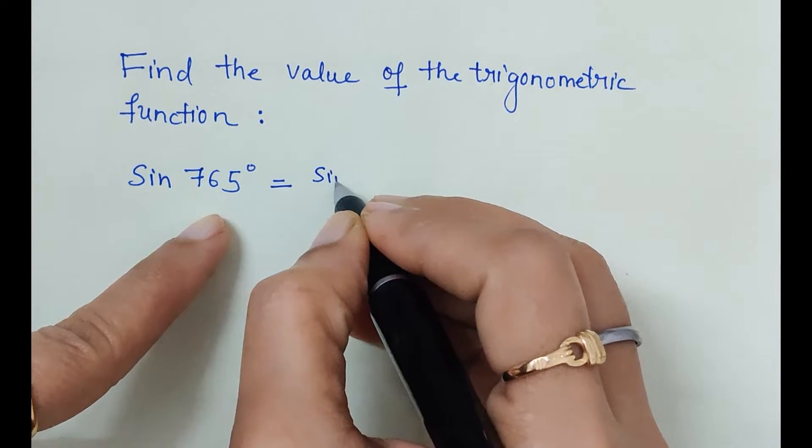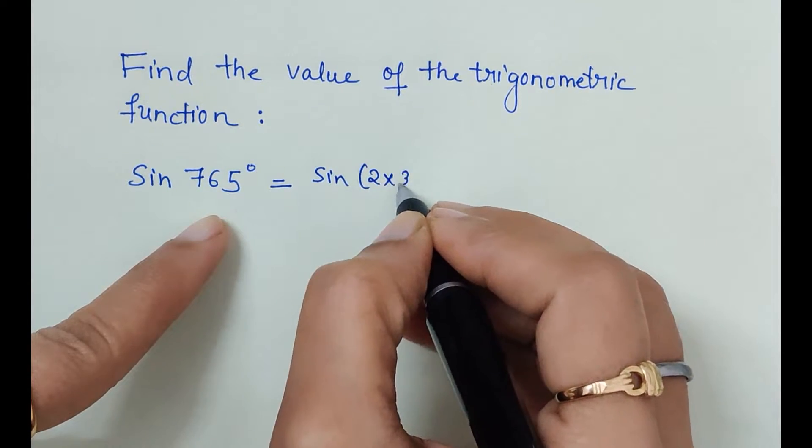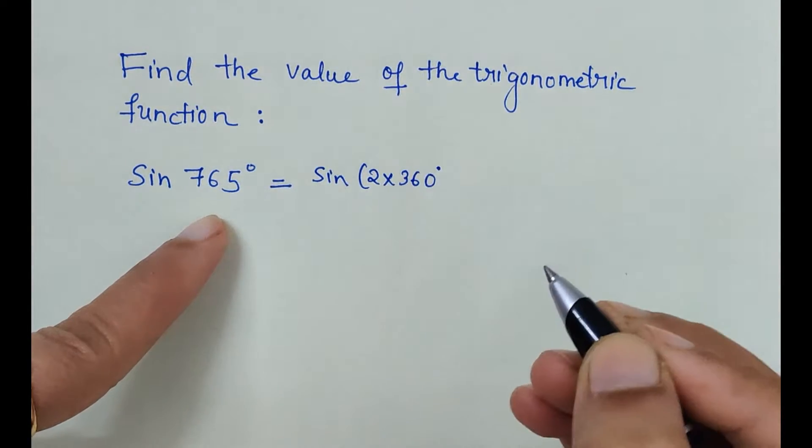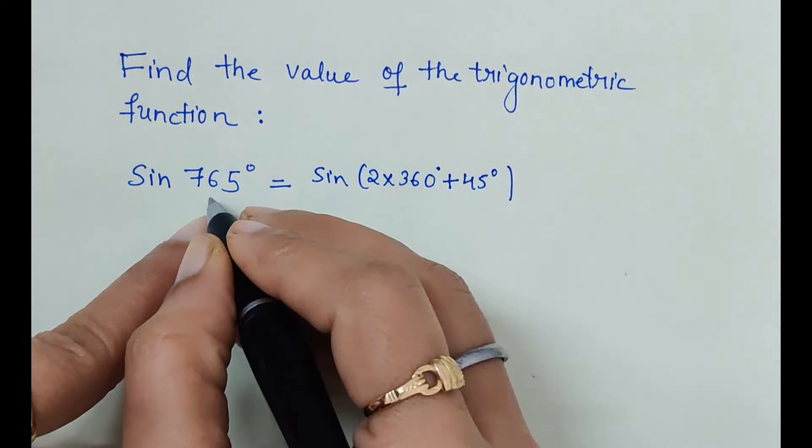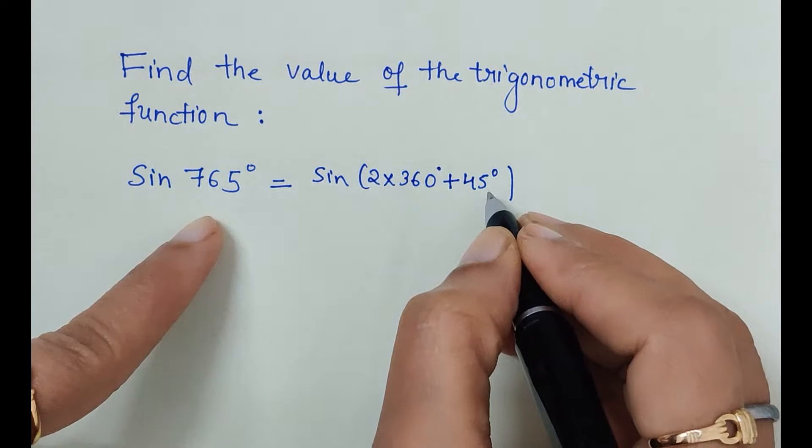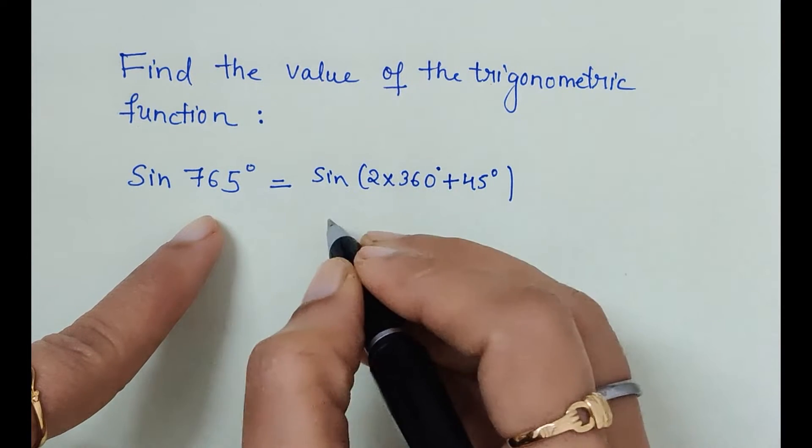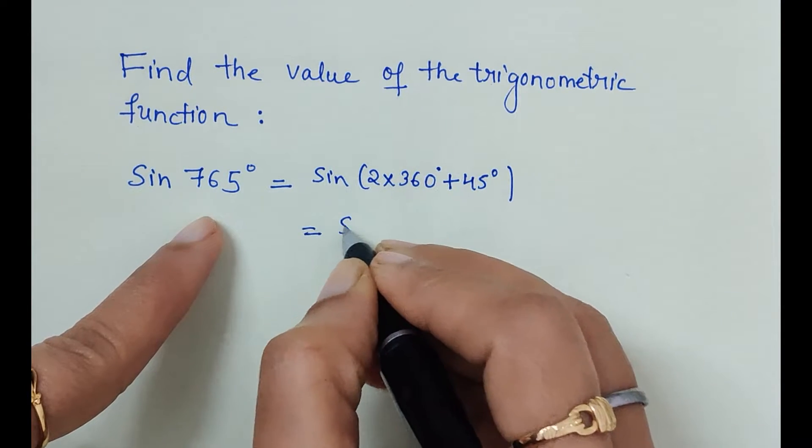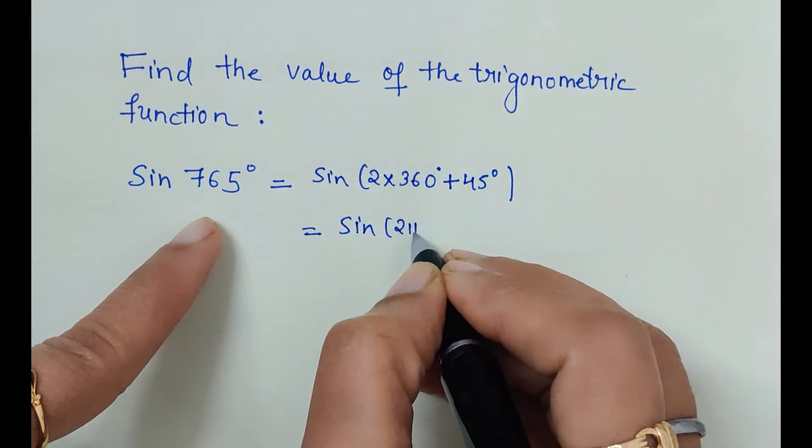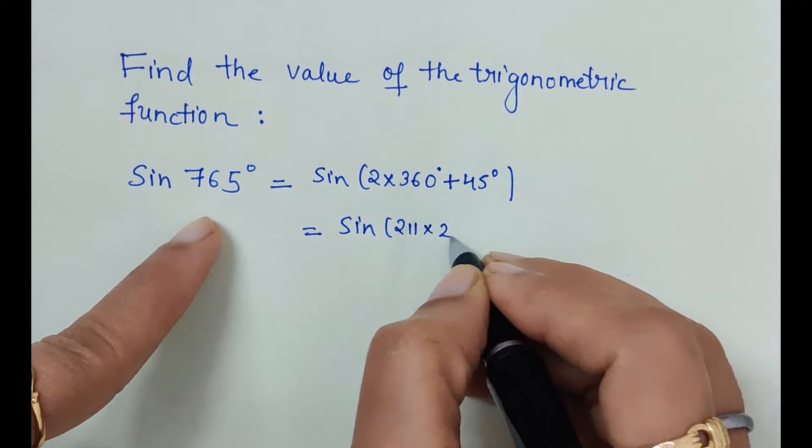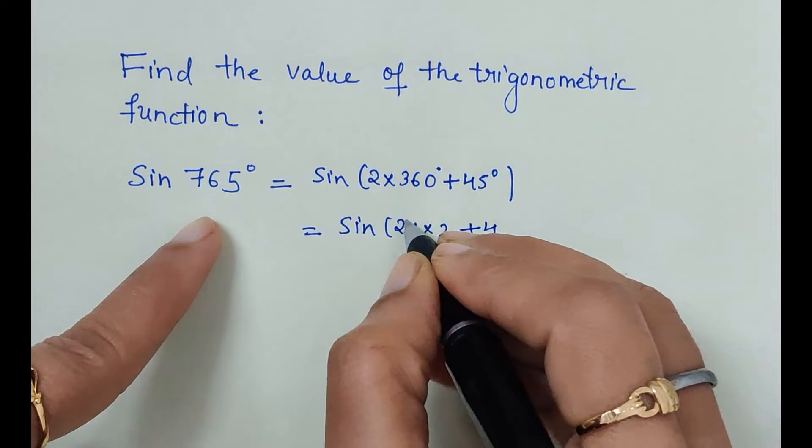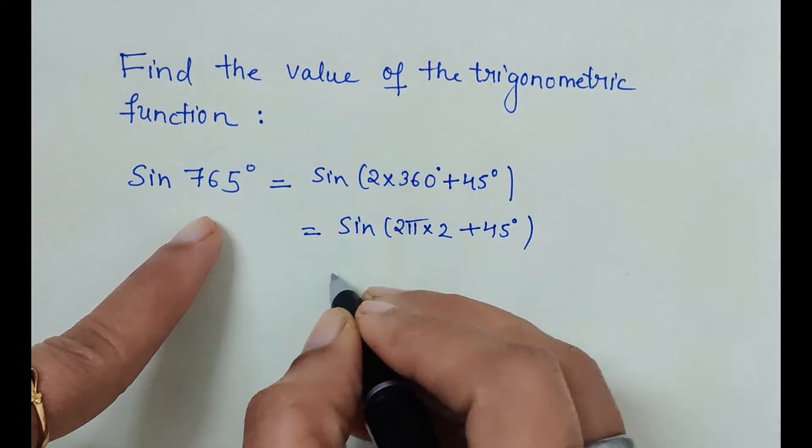Sine 765 degrees equals sine of 2 times 360 degrees, which is 720, plus 45 degrees. When we add 45 degrees to 720, we get 765. That means sine of 2π times 2 plus 45 degrees.